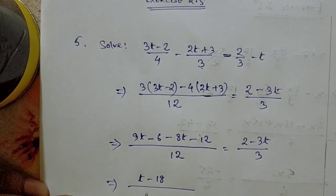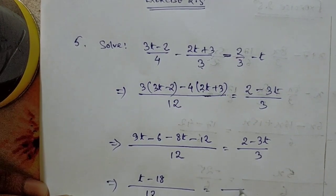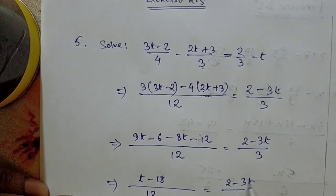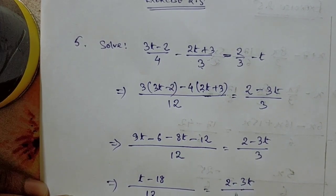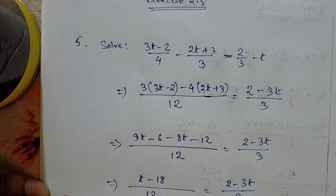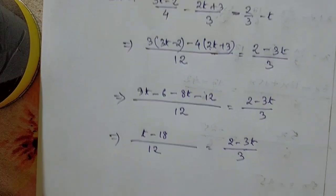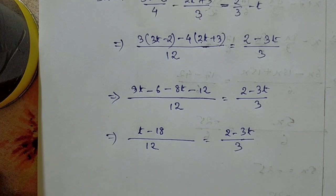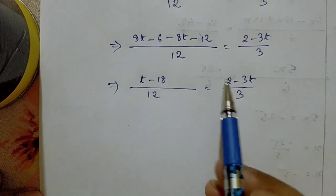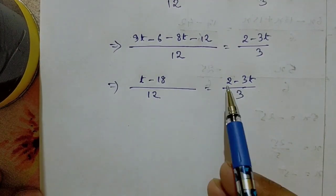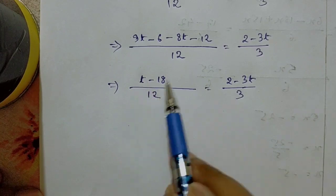Now we will cross multiply 3 with this expression and 12 with this expression. 3 times (t - 18) = 12 times (2 - 3t). This gives us 3t - 54 = 24 - 36t.